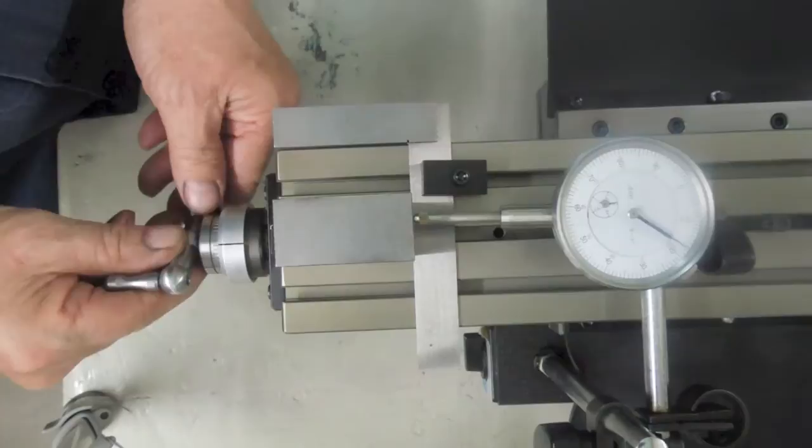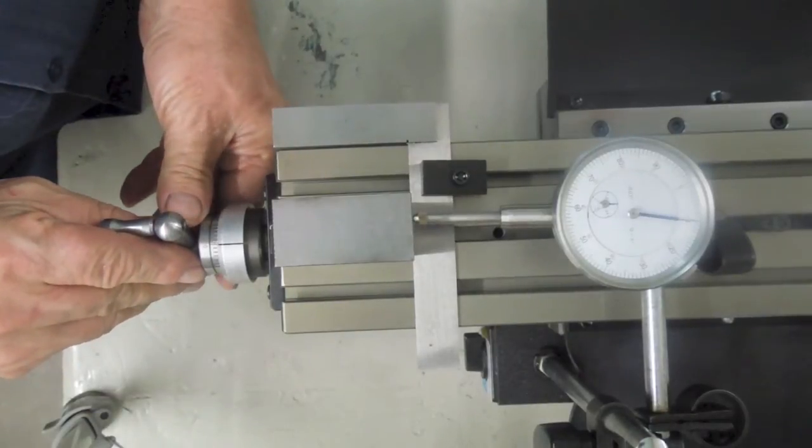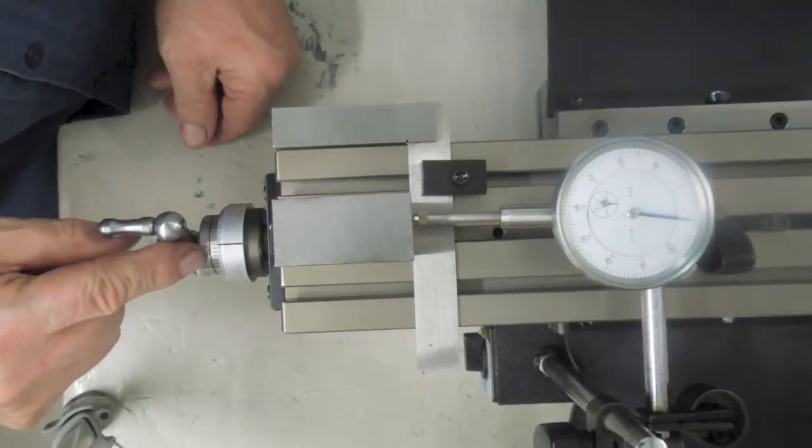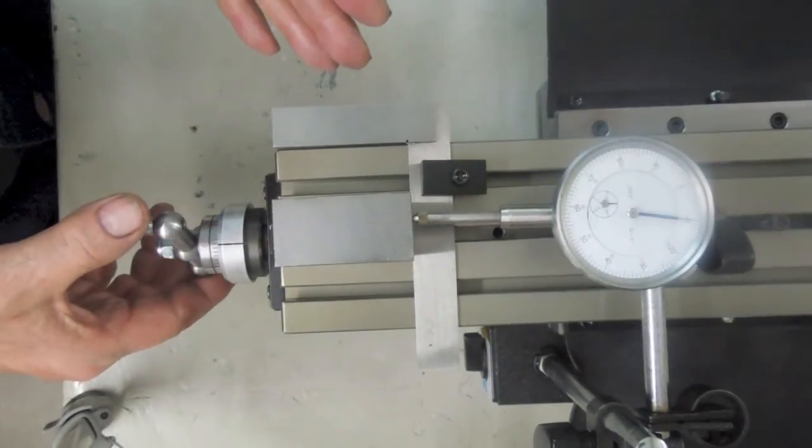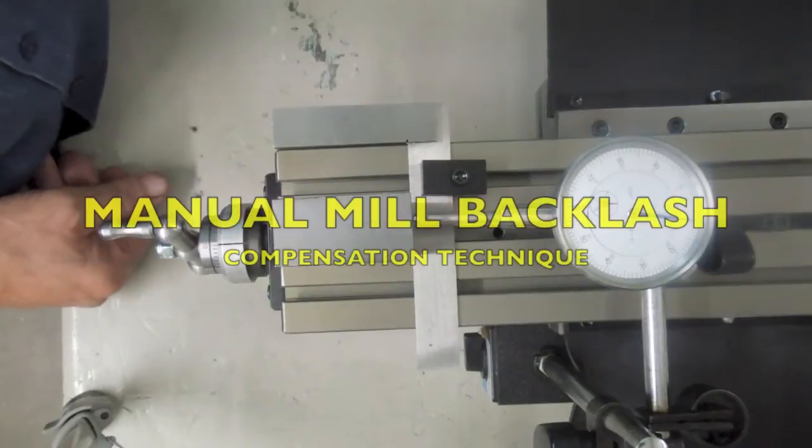We'll go over to 20. We'll come back to 10. We've got 10,000ths here. We've got 10,000ths there. It takes a little bit of practice, but that's how we get the lash out.